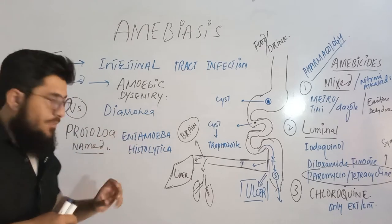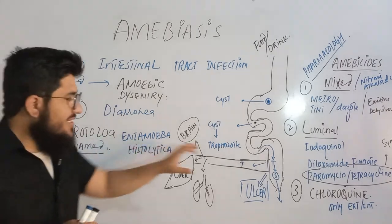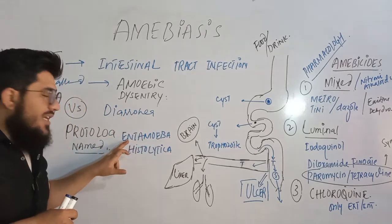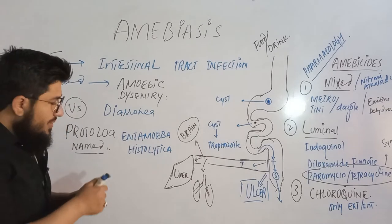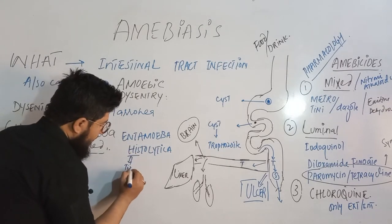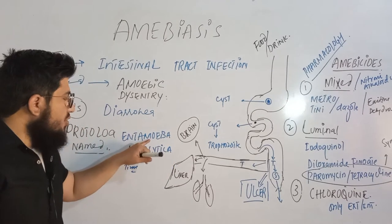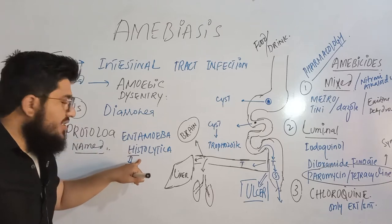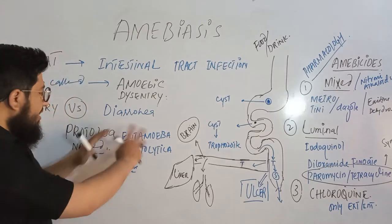One can understand the name of this protozoan: Entamoeba — 'ent' means intestine, 'amoeba' means amoeba — so it is a protozoan causing infection in the intestine. Histolytica means tissues. So this amoeba infects the intestine and causes tissue damage. Very simple understanding from the name itself.